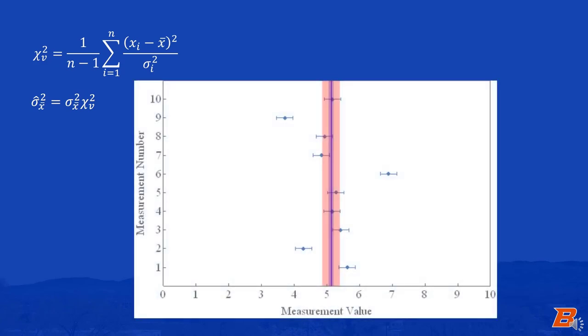Looking at our earlier examples, the case where we underestimated the individual point uncertainties gave us a reduced chi-square of over 11, which means that our uncertainty level is about 3 and a third times what we had previously thought, as shown in red.